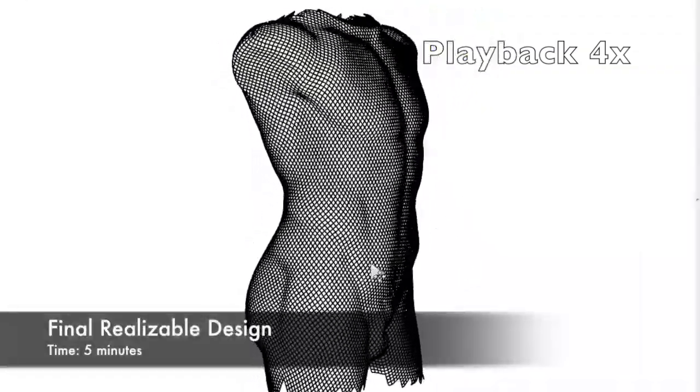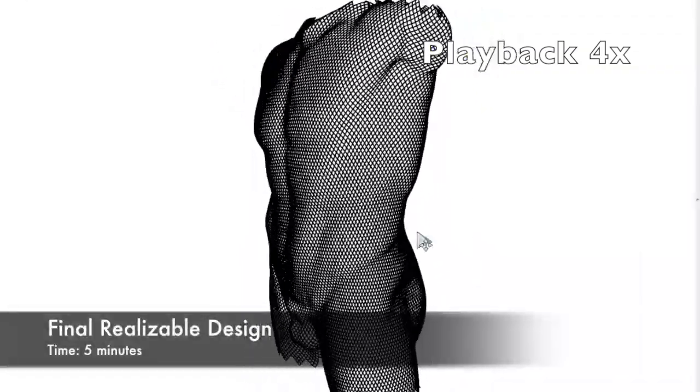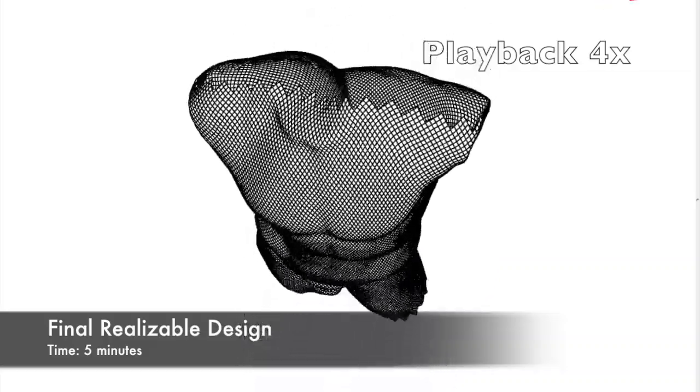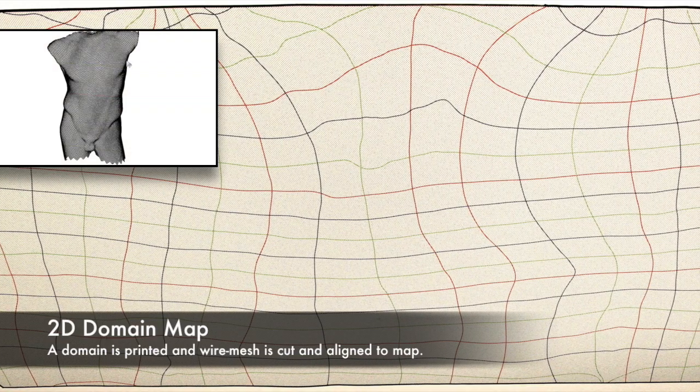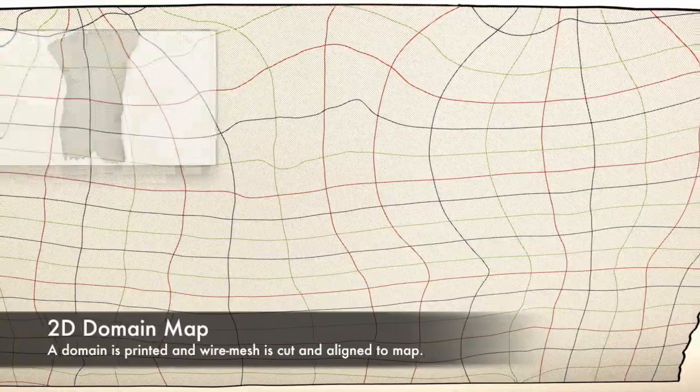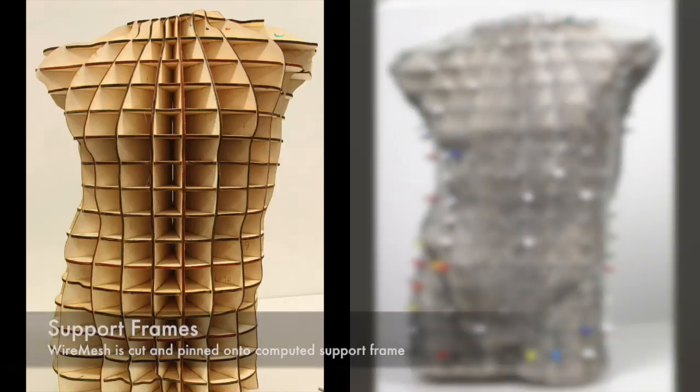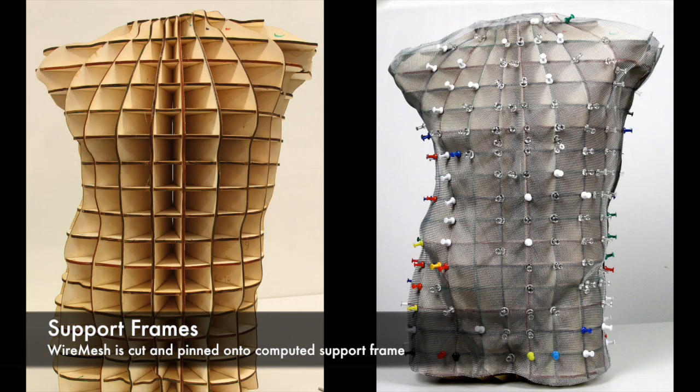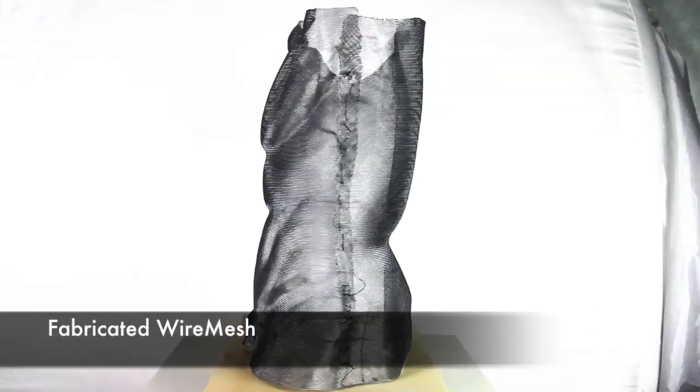Here we see the final result. From the final design, we can generate a 2D layout that can be printed, cut, and attached to a support structure. After leaving the mesh in place overnight, the supports can be removed to get the final fabricated model.